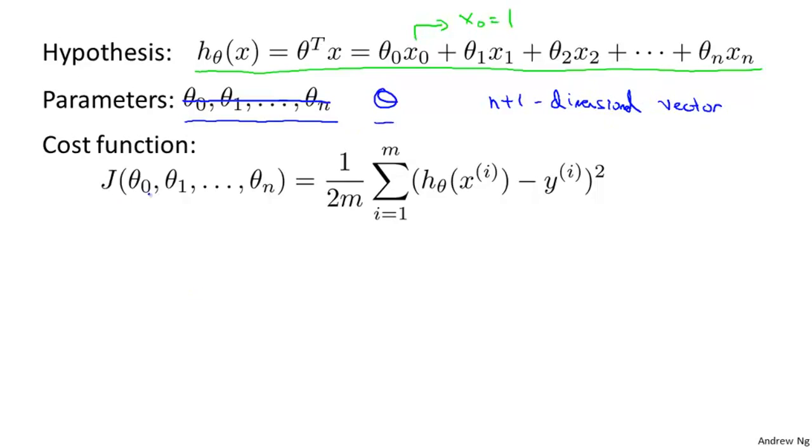Our cost function is j of theta 0 through theta n, which is given by this usual sum of squared error term. But again, instead of thinking of j as a function of these n plus 1 numbers, I'm going to more commonly write j as just a function of the parameter vector theta, so that theta here is a vector.